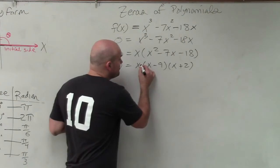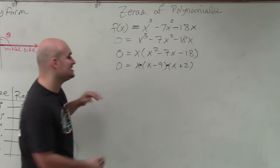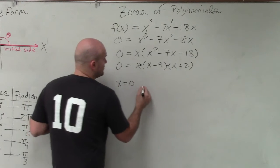So the zero product property still applies. But now we have three factors. Therefore, we have to set all of them equal to 0.